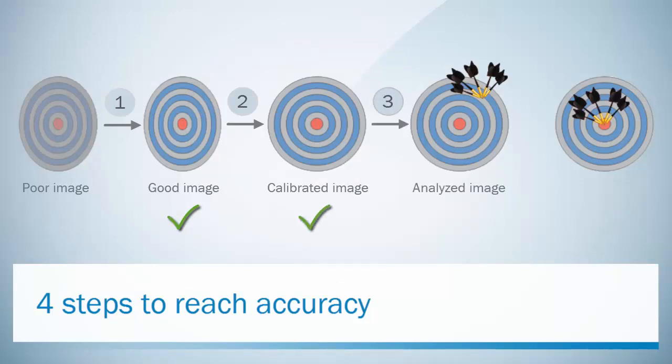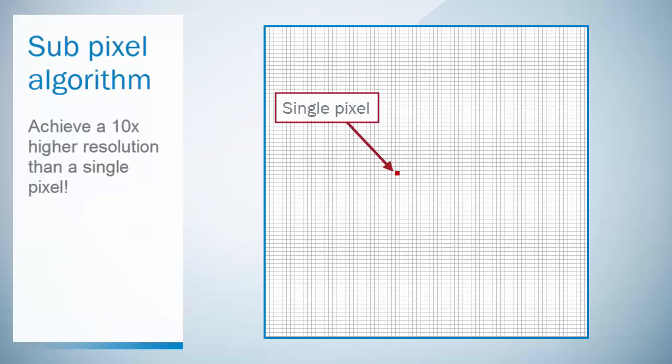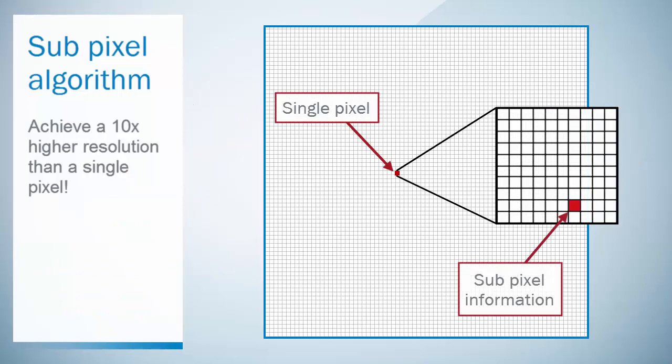The third step is achieved by using the excellent PIM60 measurement tools. Many of the tools perform at a sub-pixel level. This enables you to achieve up to ten times higher resolution than a single pixel.